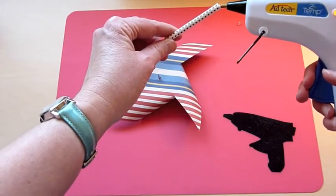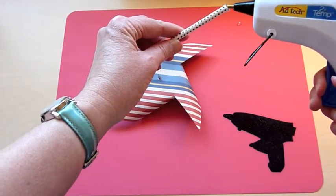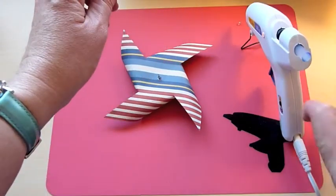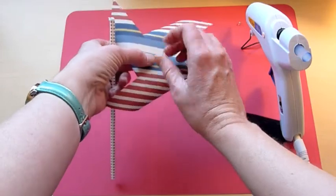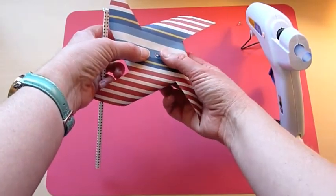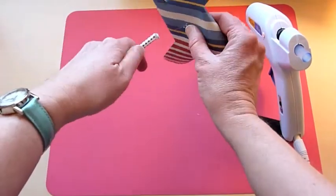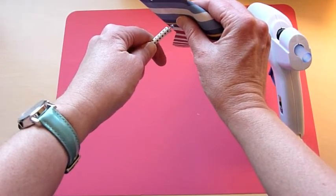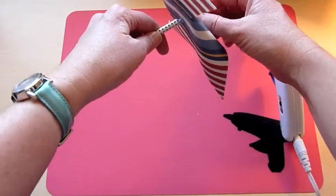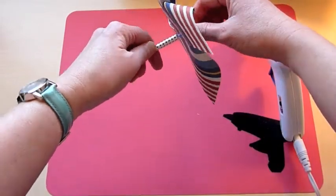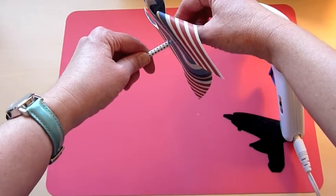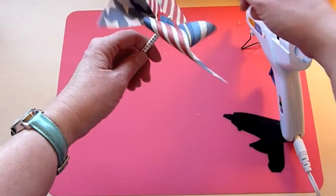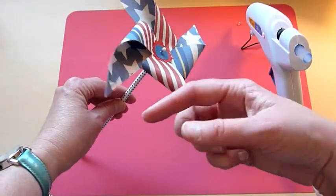And then just take your hot glue gun and put a dab right on the end of the stick. And then you're just going to take the pin with everything attached and push it right through. And the reason we're doing this with the glue is that I'm pretty sure these sticks are hollow and the pin will push through really easily, but it just doesn't feel really secure. So I thought a little drop of glue would help it. And then once you do that, you've got your pinwheel.